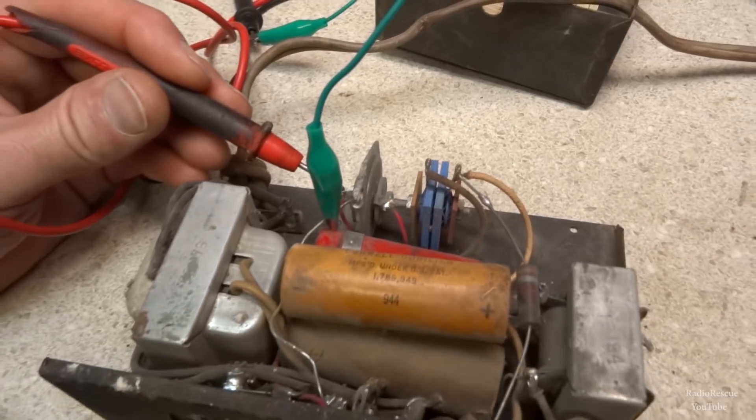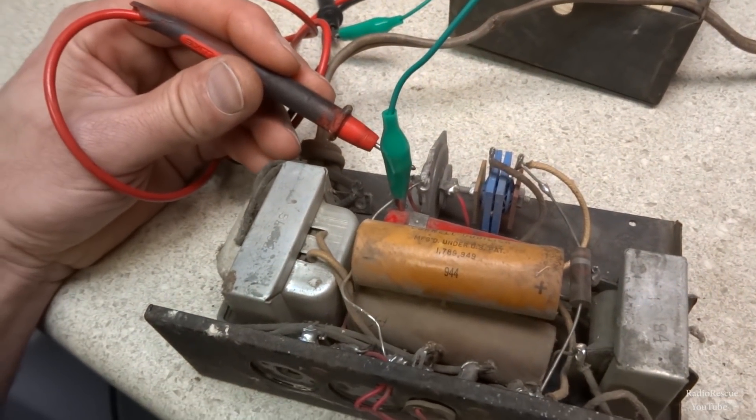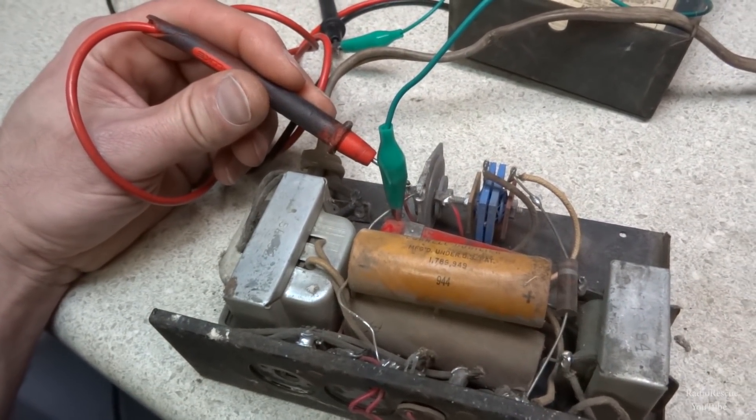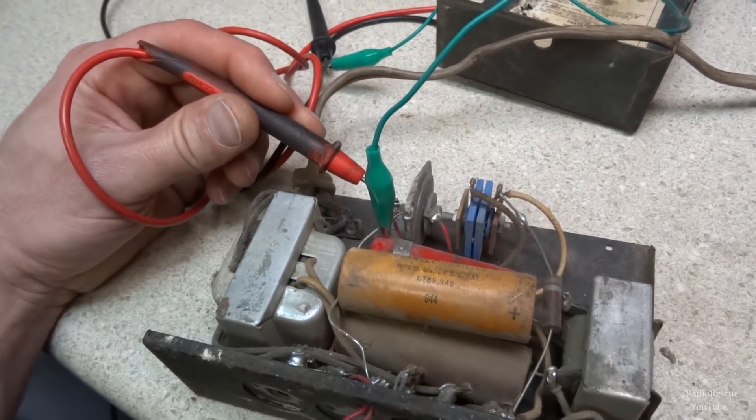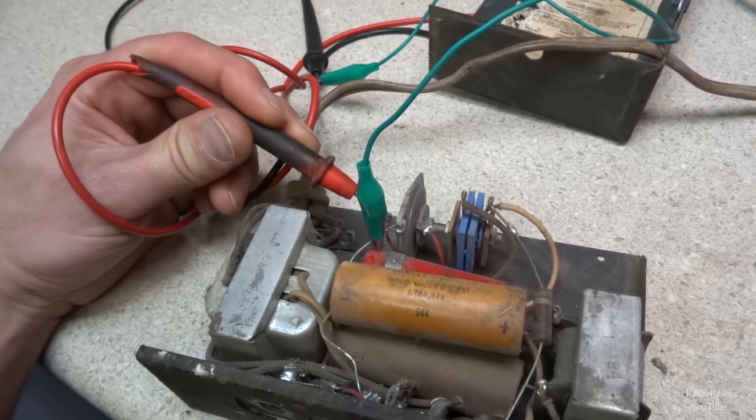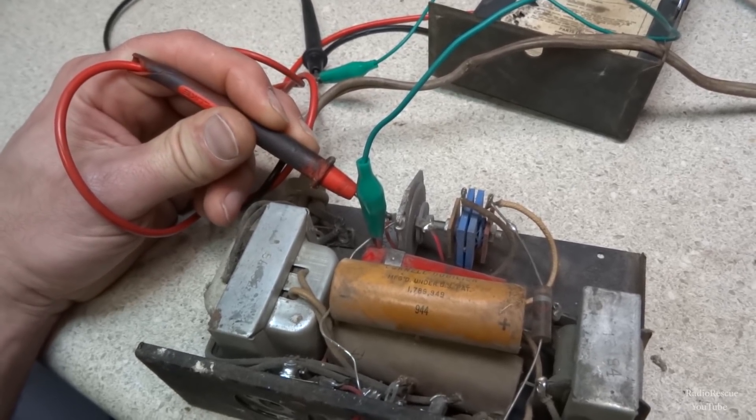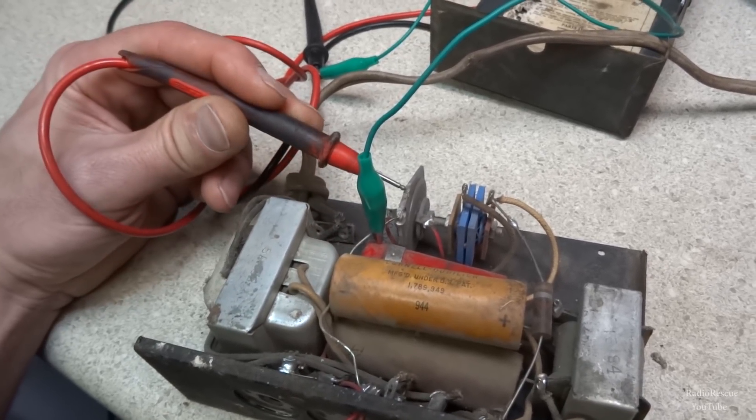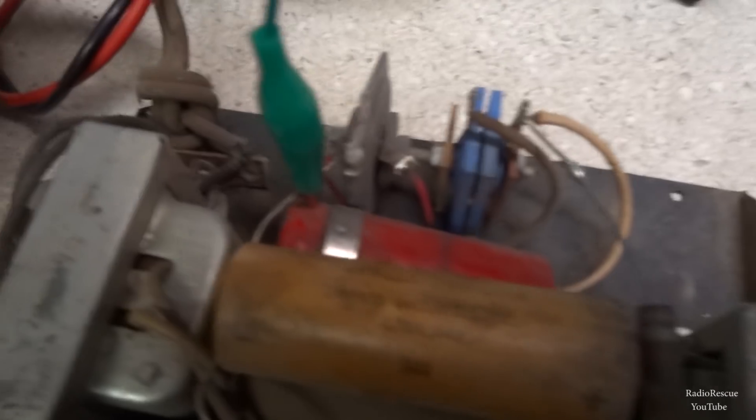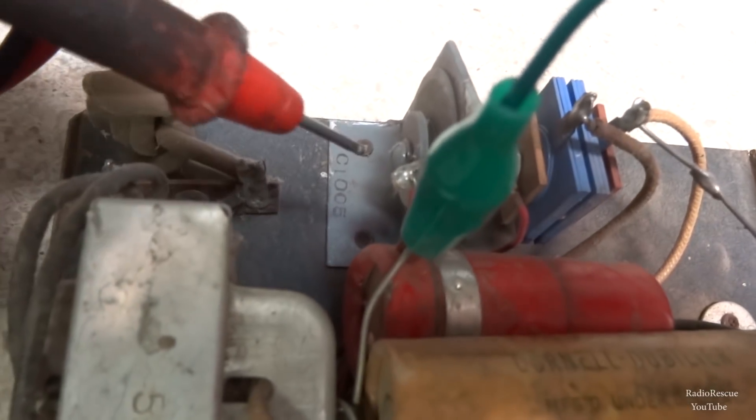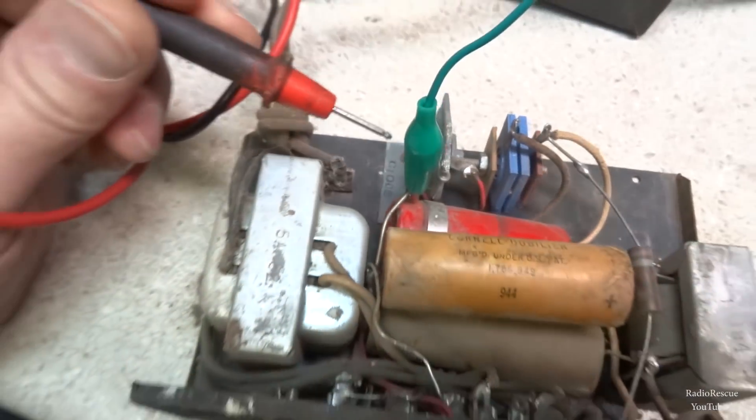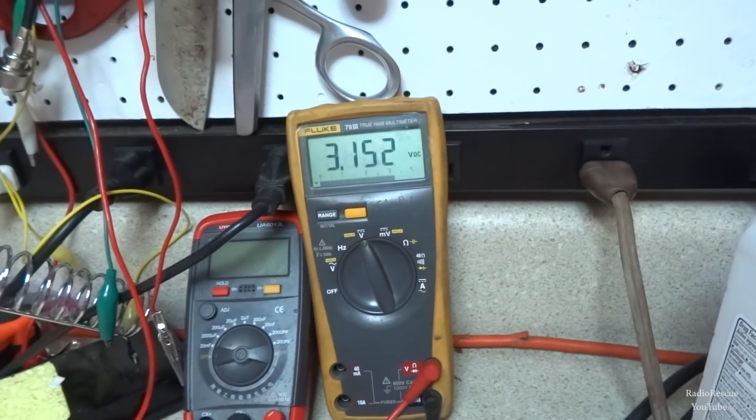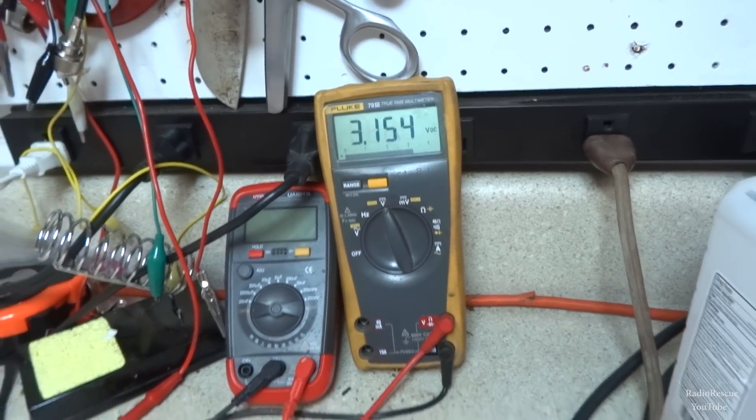Measuring our A volts or A section of our power supply, we're supposed to get about 3 volts off this selenium rectifier. This circuit is grounded through chassis ground, which is riveted down to the chassis right there. Coming off our lead we're getting about 3 volts there, so that looks good.